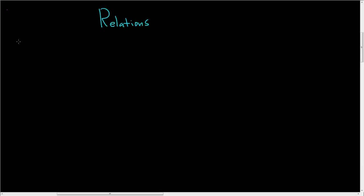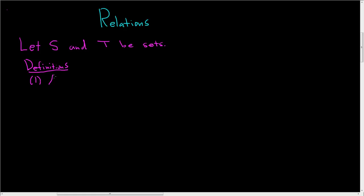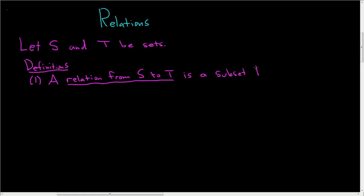Let's talk about relations. So let S and T be sets. We have a definition. A relation from S to T is a subset, which we'll call R, of the Cartesian product of S with T. That's all it is — it's a subset of a Cartesian product.